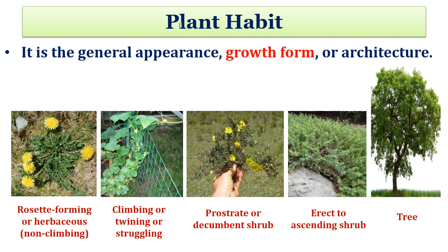The study of plant morphological characters always begins with the plant habit. It is the general appearance, growth form or architecture of the plant. These are the various plant habits. First one is rosette formation — it is non-woody and non-climbing, and shows a whorl of leaves at the base of the stem.